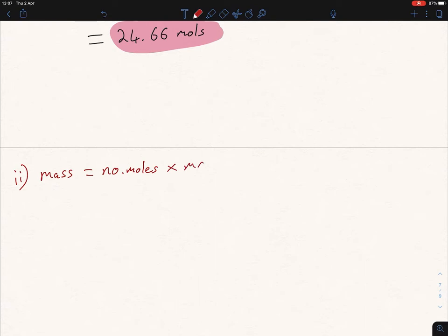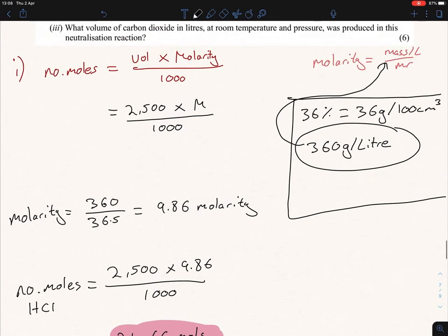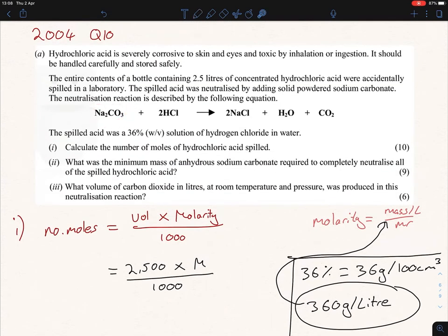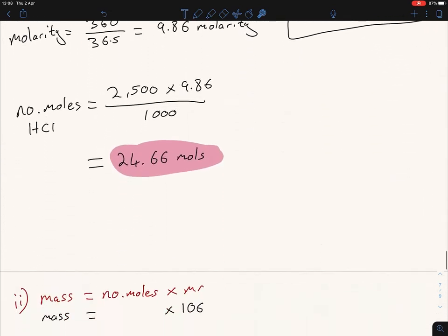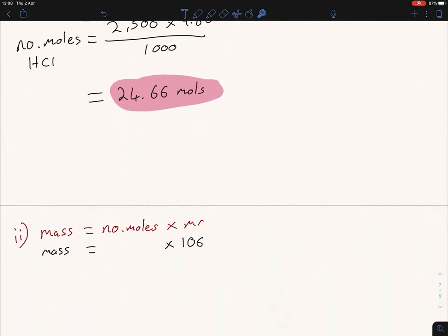The mass then equals - now we're dealing with the anhydrous sodium carbonate, so the Mr we should know from our experiments is 106. The sodium carbonate, if you add up the Mr, it'll be 106. Now what we have to do is figure out the number of moles. I'm going to use my ratio version. I can see I have number of moles of HCl already and it's two to one here, so I want to have half the number of moles for sodium carbonate. So instead of 24.66, I'm going to divide that by two and we get 12.33.